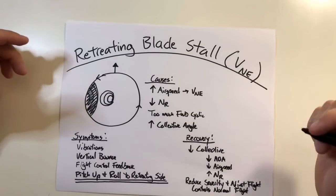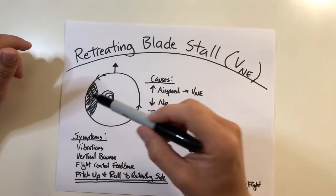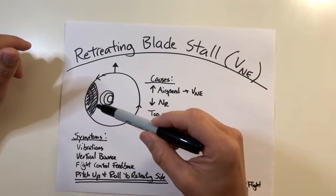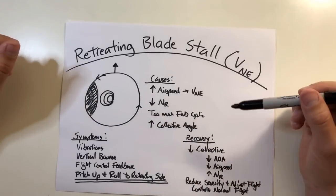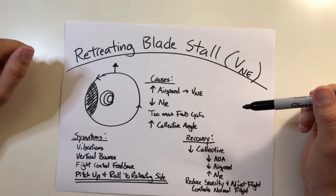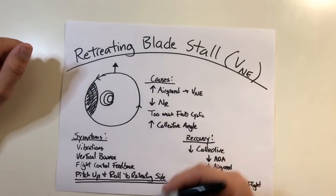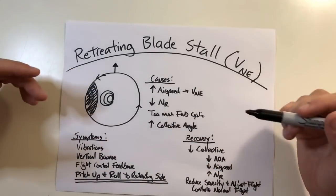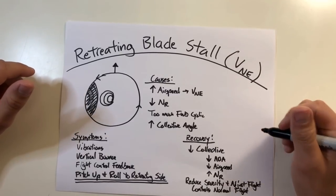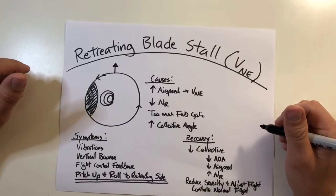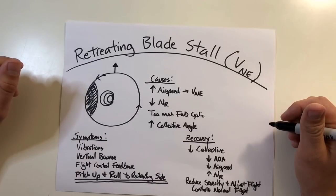In essence, retreating blade stall is getting to a point where the retreating blade can no longer compensate for the dissymmetry of lift, and it begins to stall. It's the most limiting factor for high-speed helicopter flight. We've covered the symptoms, causes, and how to recover, outlined here in the video. Thanks for watching — be sure to hit like and subscribe. I'm Jacob, and this is Helicopter Lessons in 10 Minutes or Less.